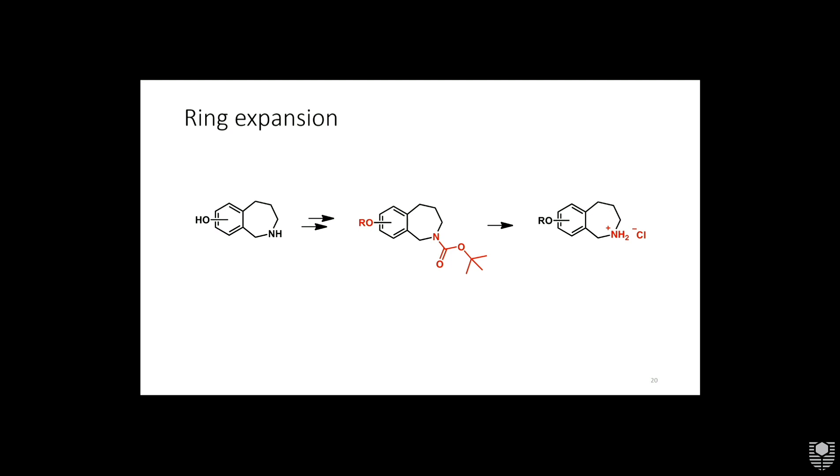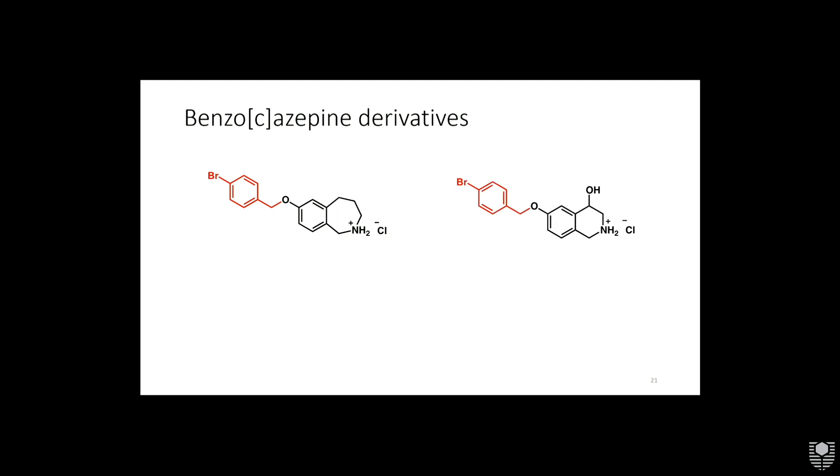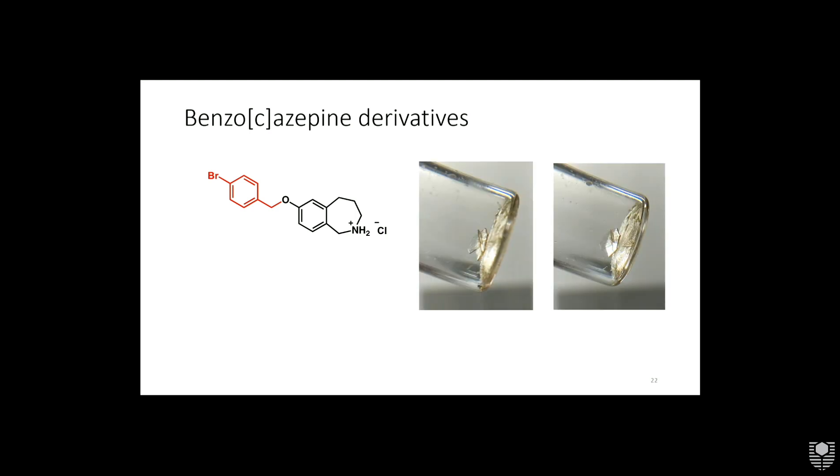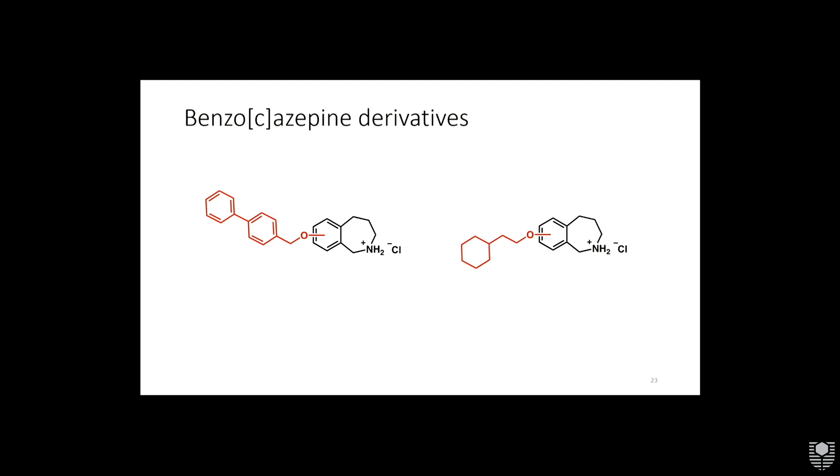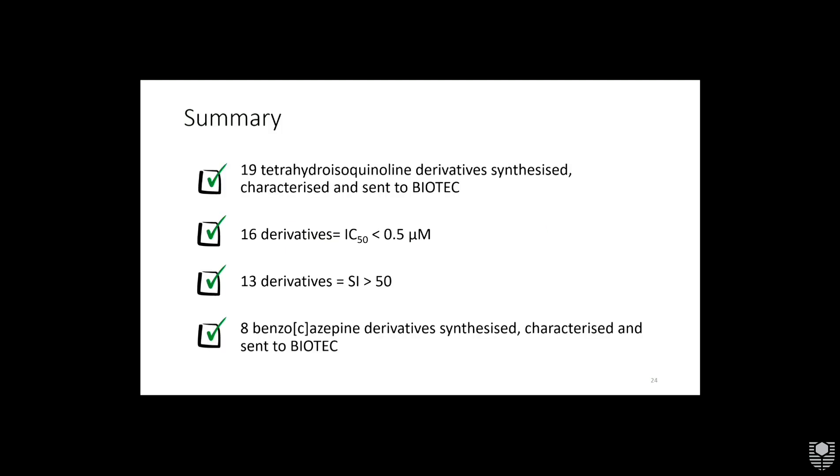I made about eight different derivatives of these to get a gauge of whether they were going to be promising or not. They are with Biotech but we don't have results yet. Just a bit of an example of the types of things that I made - this one might look familiar, it's analogous to one of the tetrahydroisoquinoline derivatives that was looking really promising. As a bonus, I also got some really pretty crystals and got extra crystallography done. I also tried some biphenyl, aliphatic substituents, and they have all been sent to Biotech as well.